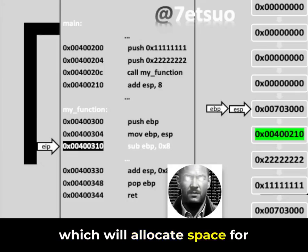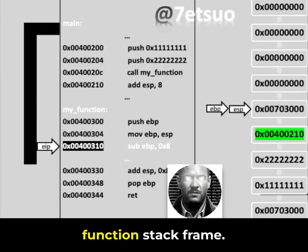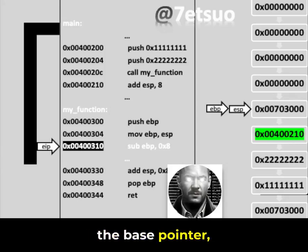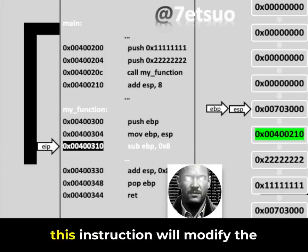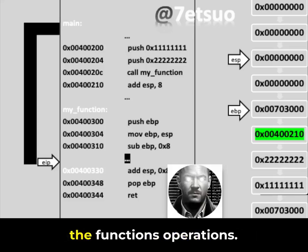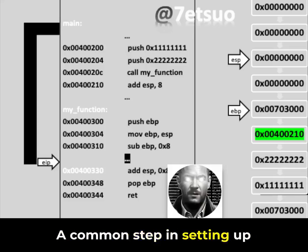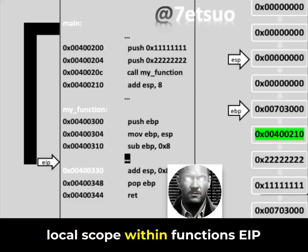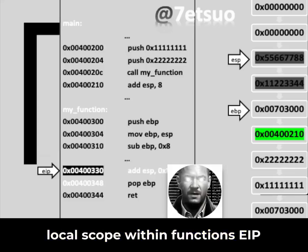EIP is at sub EBP 0x8, which will allocate space for local variables within the function stack frame by subtracting from the base pointer. This instruction will modify the stack frame to make room for the function's operations — a common step in setting up local scope within functions.